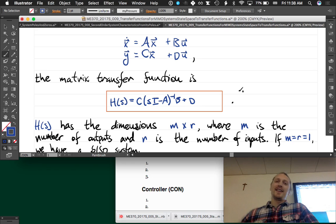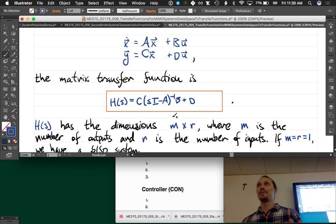H(s), our system, our matrix transfer function. So C times (sI - A) inverse B plus D, that is a matrix. It's going to have dimensionality M by R, where M is the number of outputs and R is the number of inputs.